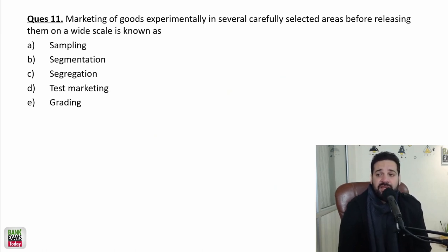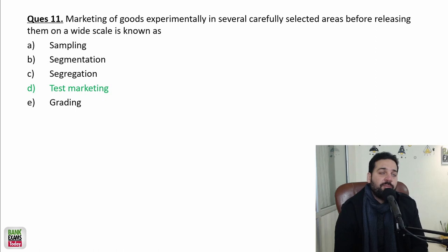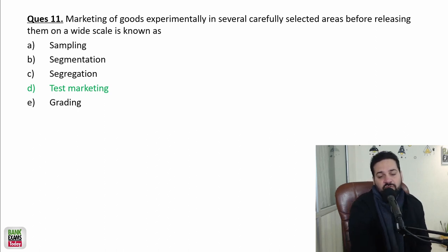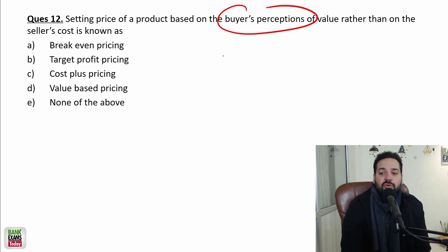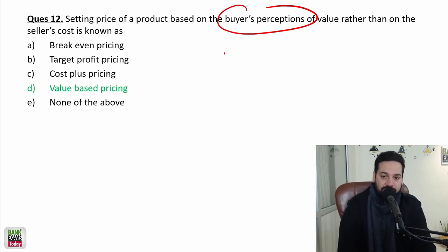Marketing goods experimentally in several selected areas before releasing them on a wide scale is known as test marketing. Setting the price of a product based on the buyer's perception — for example, in online courses — is value-based pricing. The price is set based on the value perception of the buyers.